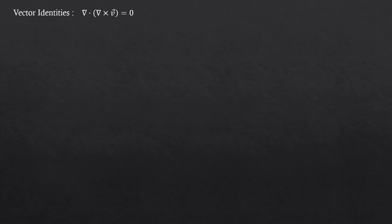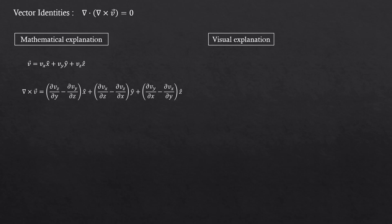The second vector identity. Again, I'll explain this both mathematically and visually. So here we have some vector v. It's a vector, so we could express it like this. The curl of this vector should look like this. And the divergence of that should be this.